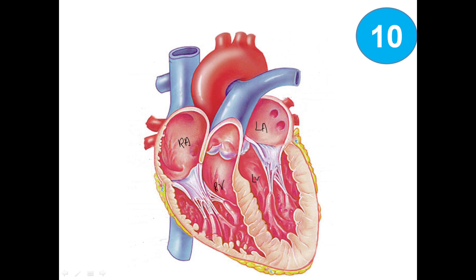Talking about the four valves: we have two atrioventricular valves — this one is the bicuspid valve, also known as the mitral valve, and this one is the tricuspid valve. This is the aortic semilunar valve and this is the pulmonary semilunar valve. Between the two atria is the interatrial septum, and between the two ventricles is the interventricular septum.